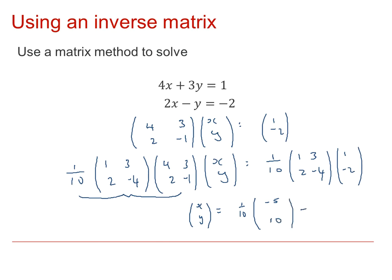Or, in other words, then we can write, read off from there, that x is -5 over 10, which is -1/2, and y is equal to 10 over 10, which is 1.